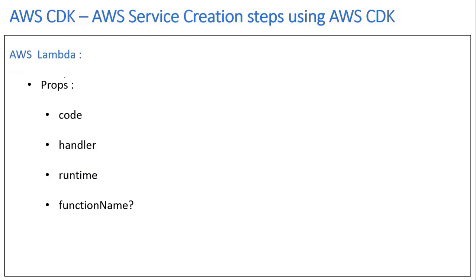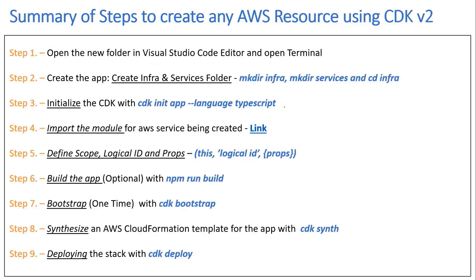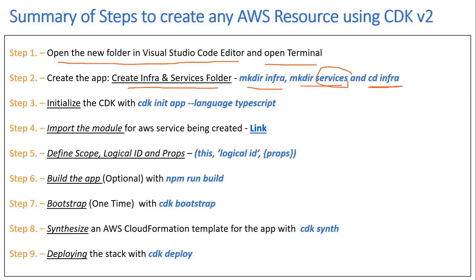In this lecture, we're going to create an AWS Lambda with these four attributes: code, handler, runtime, and function name. Now that we have created multiple services using AWS CDK, I have a summarized version of the steps to create these resources. The first step is to open a new folder in the Visual Studio Code editor and then open the terminal. In the next step, we're going to create two folders: infra and services, using the mkdir command. The services folder will have the Lambda code and the infra folder will have all the infrastructure code.